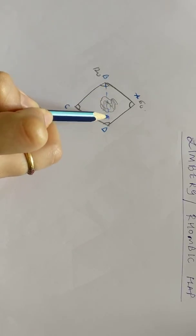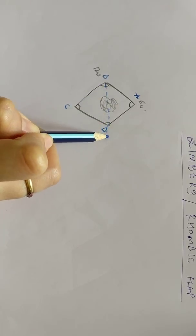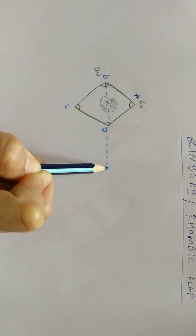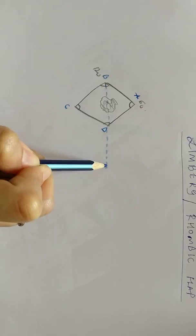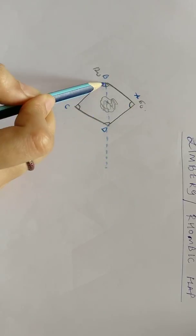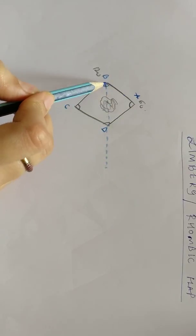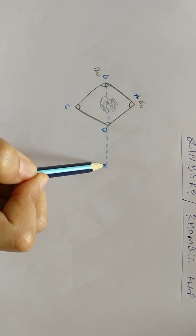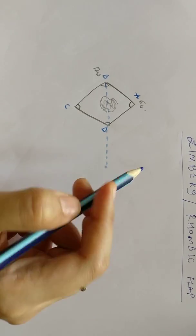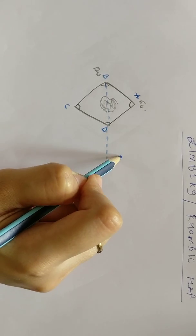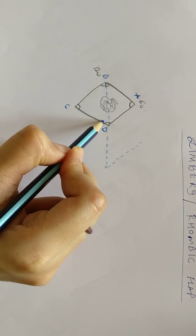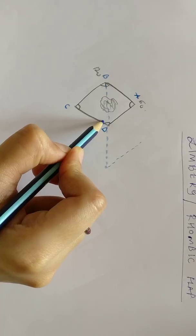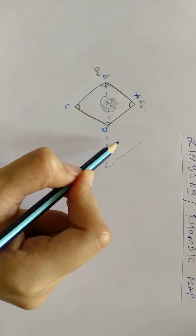The point BD is from where we are going to extend and try to get our flap. Once we make this extension BD, the length is equal to any side of the rhomboid or the rhombic. Once it is equal to the sides, we get this line and from there we again extend a line which is equal to the sides and also parallel to any of the side.